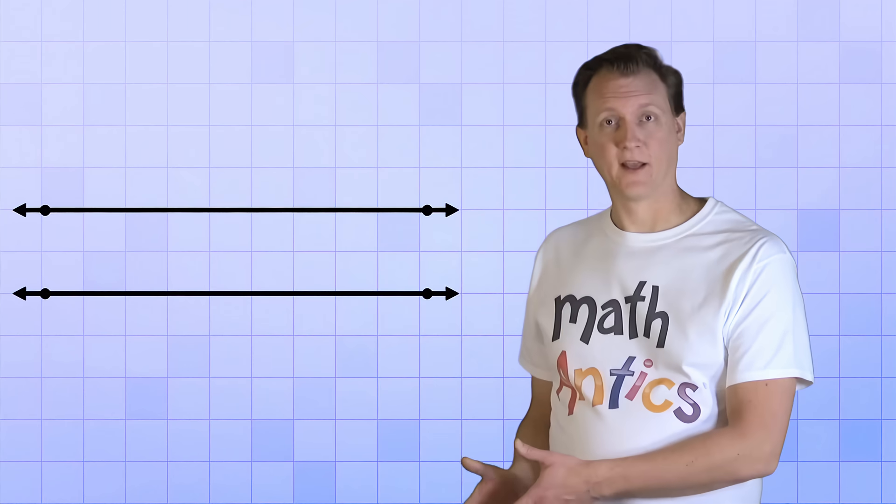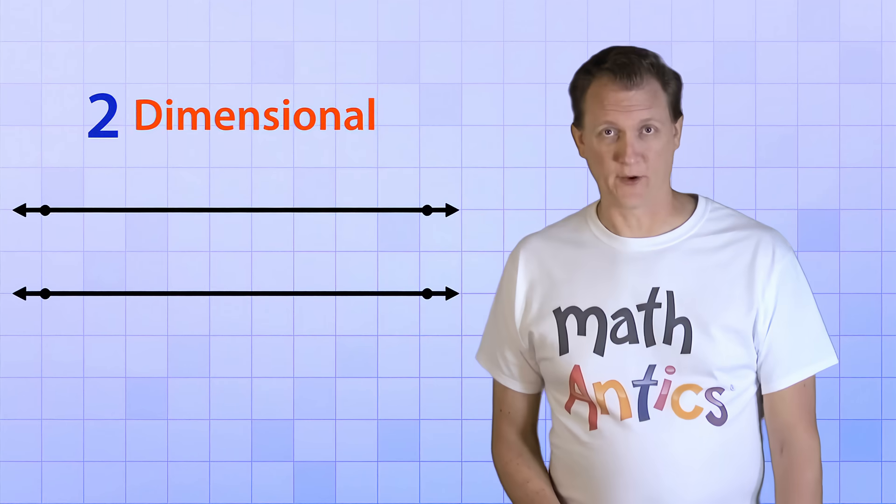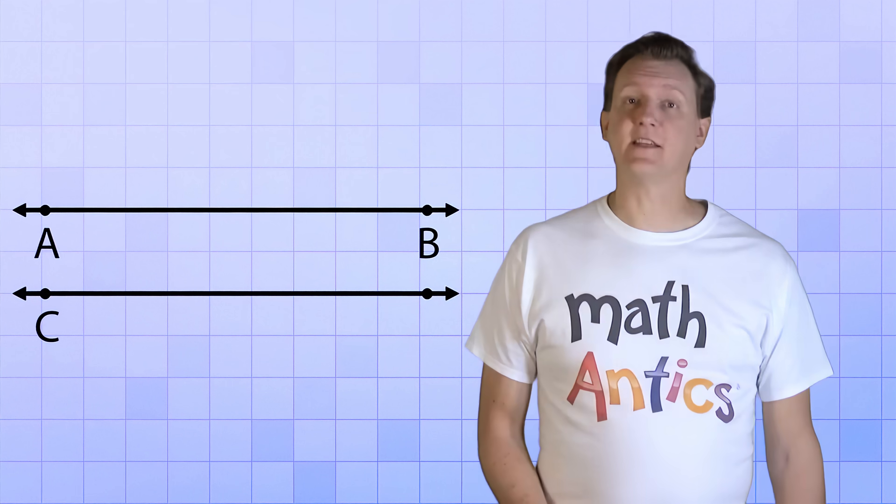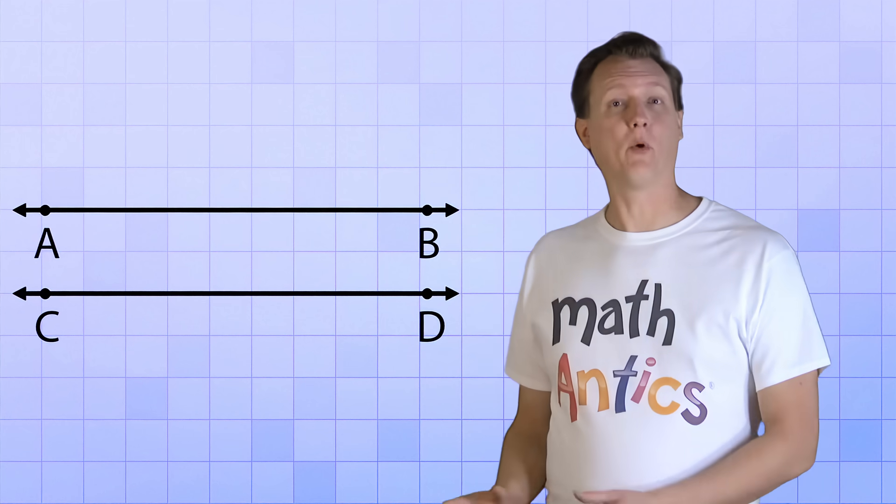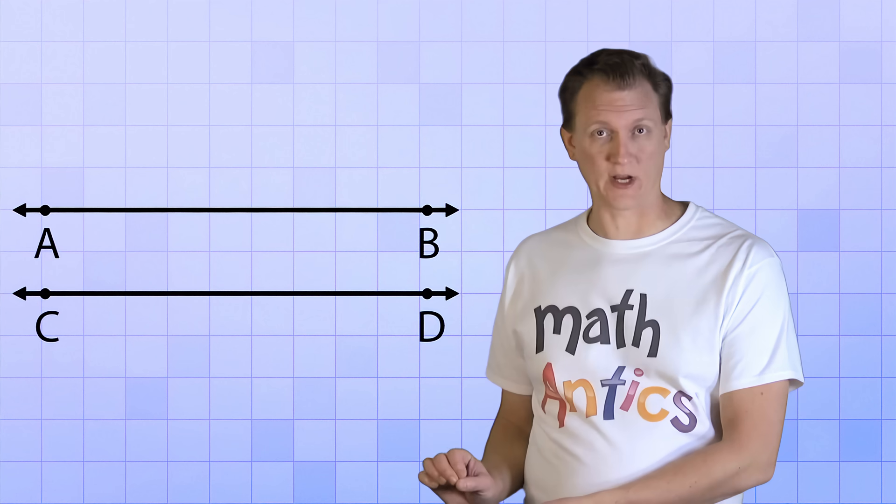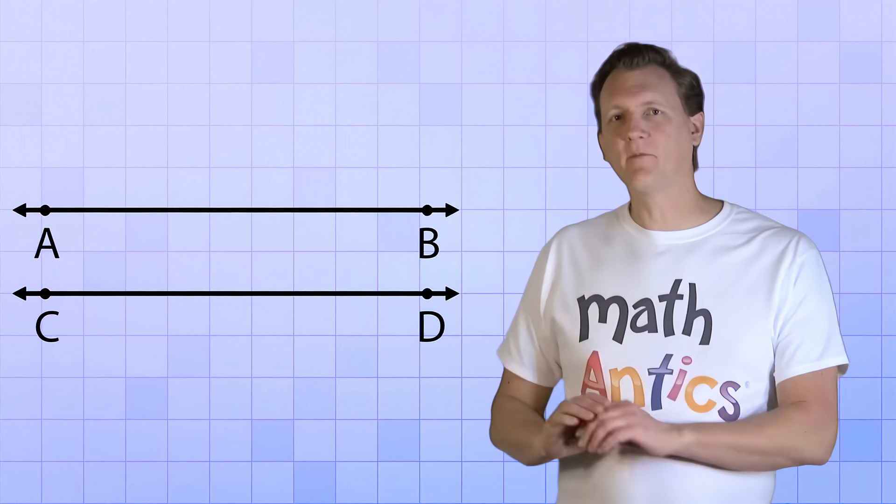So let's start with a couple of lines that are in the same plane. We're only going to be dealing with two-dimensional geometry in this video. These lines are conveniently called line AB and line CD. Now, the important thing to notice about these two lines is that they're pointing in exactly the same direction. So even if we extend them forever,